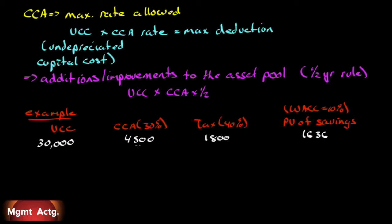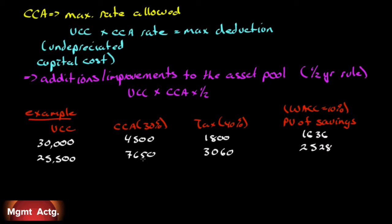In year two, we've taken $4,500 off, so our undepreciated capital cost is $25,500. Taking 30% gives us $7,650 — no half-year rule in the second year. Deducting $7,650 at 40% tax saves us $3,060; discounted back two years at 10%, that's a net present value of $2,528. In year three, the UCC is $17,850; 30% gives $5,355 in deductible CCA, saving $2,142 in tax, with a present value of $1,609. And on and on it goes.